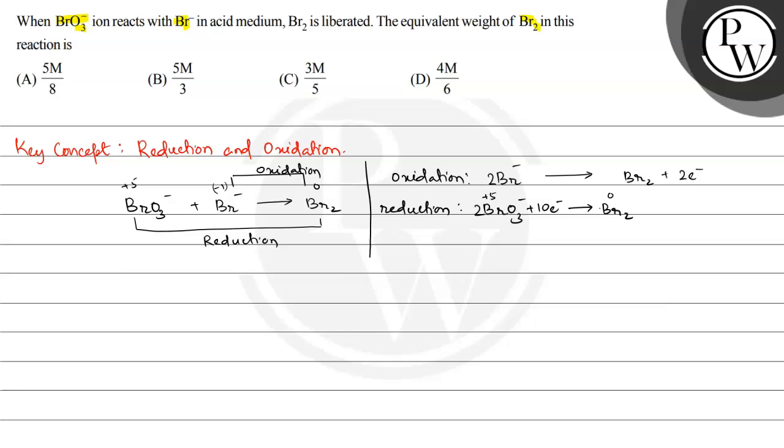They will require H+ ions to form water, so the net reaction will be 2 BrO3- plus 12 H+ giving Br2 plus 6 H2O.